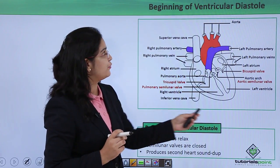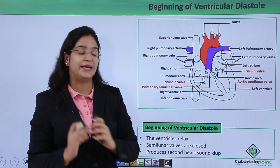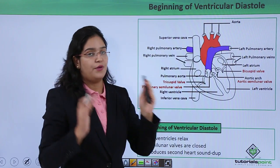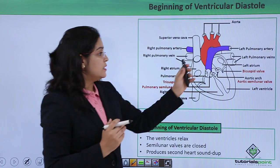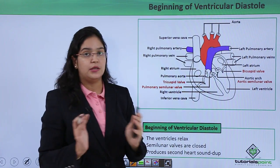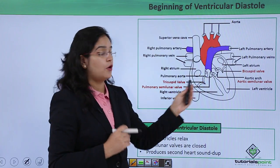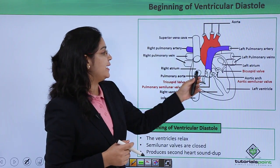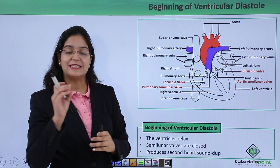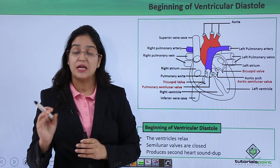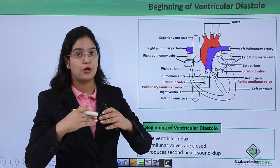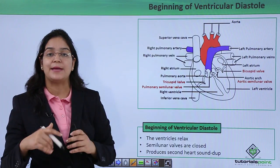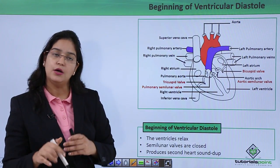Beginning of ventricular diastole: after the ventricles have pumped out their blood, they enter the relaxation phase. As ventricular relaxation starts, the semilunar valves close to prevent backflow from the pulmonary artery and aortic arch. This produces the second heart sound: 'dub'. So the first sound 'lub' is produced by the closing of the tricuspid and bicuspid valves, and the second sound 'dub' is produced by the closing of the semilunar valves.